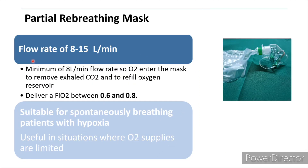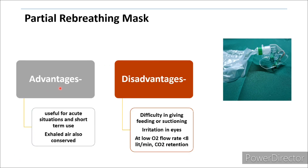The flow rate for the partial re-breathing mask is between 8 to 15 liters per minute, with a minimum of 8 liters per minute, so that oxygen enters the mask to remove exhaled CO2 and refill the oxygen reservoir. FiO2 between 0.6 to 0.8 will be delivered to the child. It is suitable for spontaneously breathing patients and useful in situations where the oxygen supply is limited.